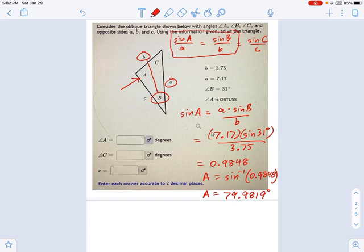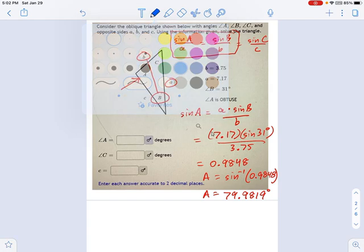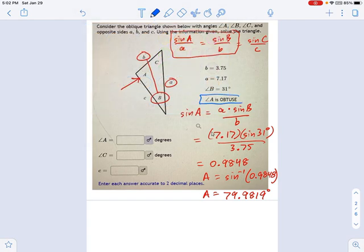Because I was told at the beginning of this thing that angle A is obtuse. And look what we just had - we just solved for an acute angle. So we have to figure out how to resolve this issue.